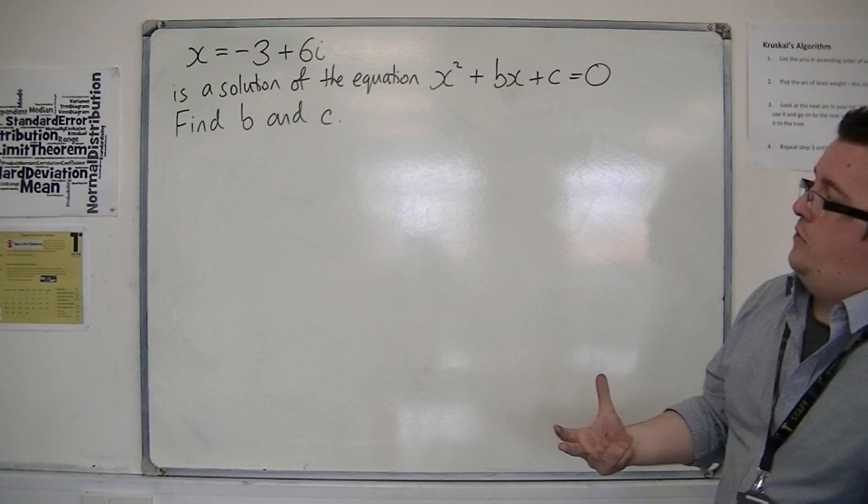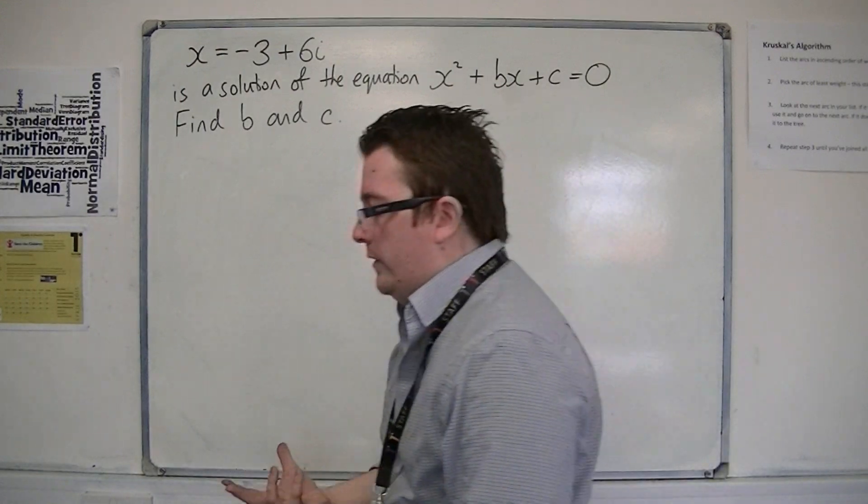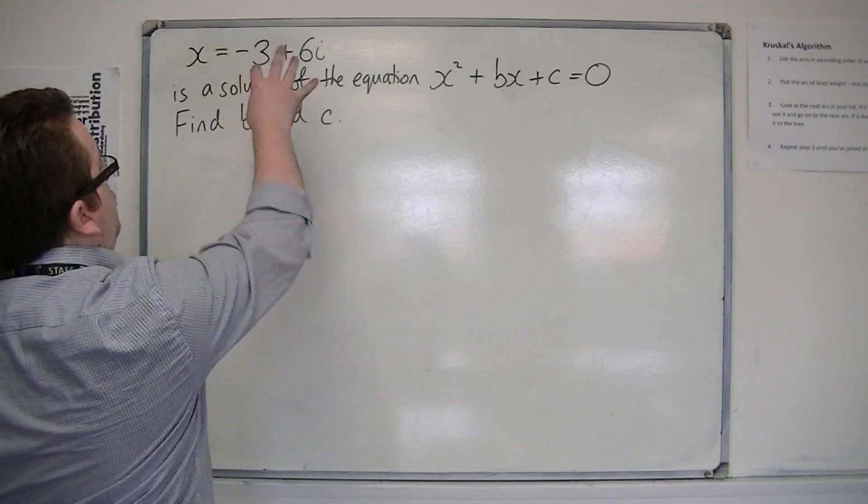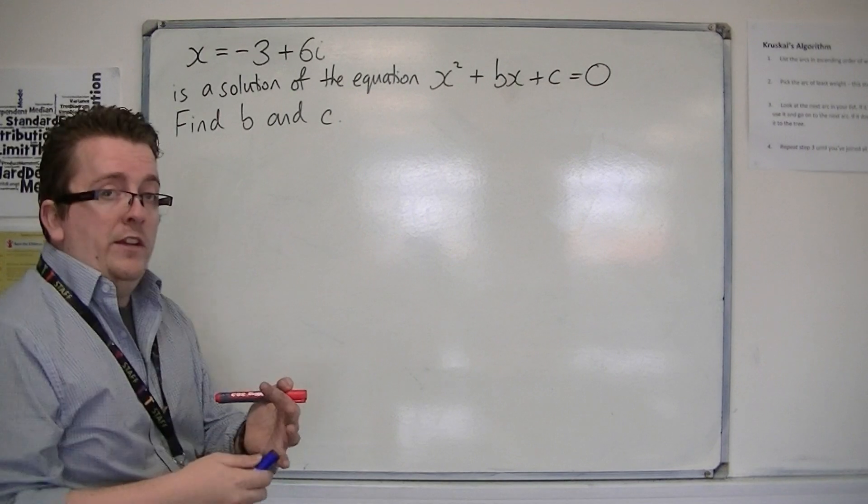If x equals minus 3 plus 6i is one of the solutions, then its complex conjugate would have to be the second solution.